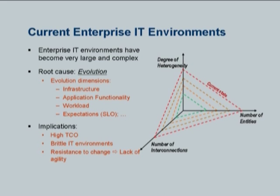The implications are obvious: you have high total cost of ownership and a very brittle environment. You try changing something here and something else somewhere else breaks — so nobody wants to change anything. This goes back to the agility issue. Real enterprises are very complex, and evolution is a key contributor to that complexity.